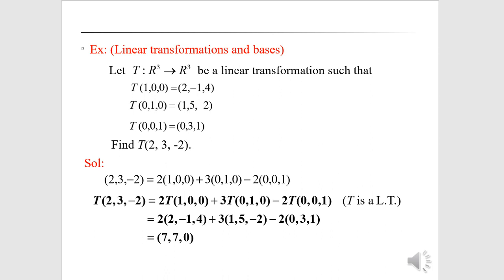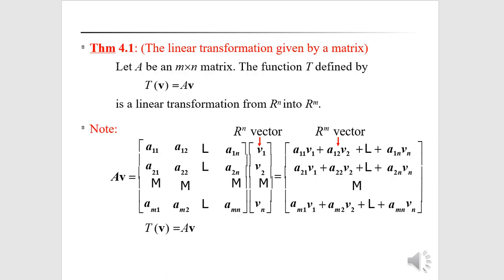Linear transformation and basis: let T: R³ → R³ be a linear transformation with T(1,0,0), T(0,1,0) = (1,5,−2), and T(0,0,1) = (0,3,1). We write (2,3,−2) as a linear combination: 2(1,0,0) + 3(0,1,0) − 2(0,0,1). Then T(2,3,−2) = 2·T(1,0,0) + 3·T(0,1,0) + (−2)·T(0,0,1), which gives (7,7,0).